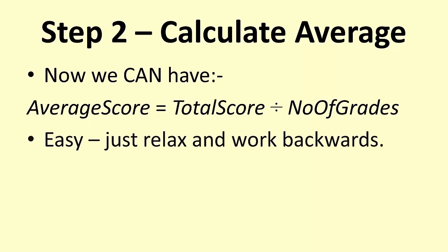Now we can go back to step two again, calculate the average. So now we can have average score equals total score divided by number of grades. That's fine now. It's easy. Just relax and work backwards. If you have a problem, just rework what you've done a bit until the problem disappears. Try and solve little problems, lots of them, rather than big problems and trying to do all of them and not being able to work it out.